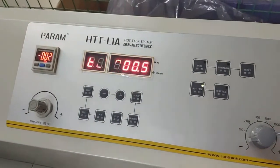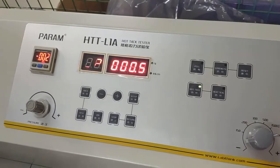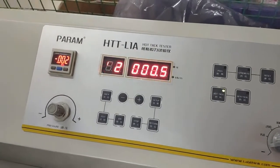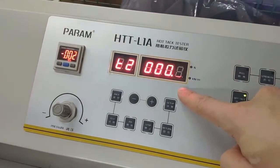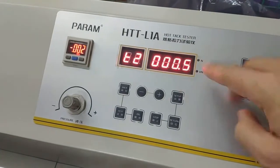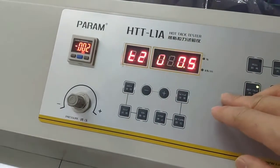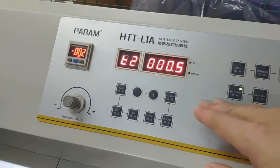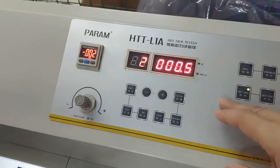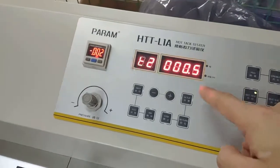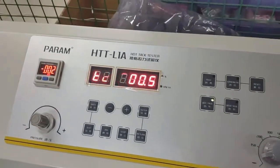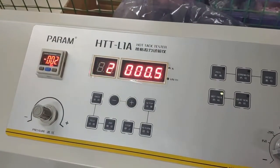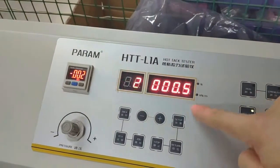T1 to T6 are for different sections of the time setup. You just need to know T2 and T3. For the other time values you don't have to change them, just set as the default value. T2 means the heat seal or hot tack seal time.